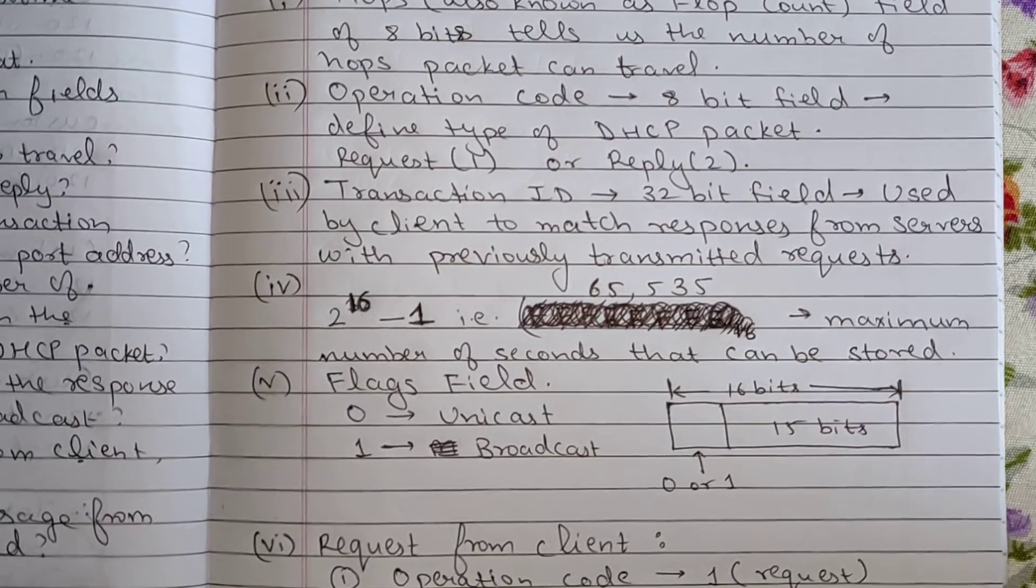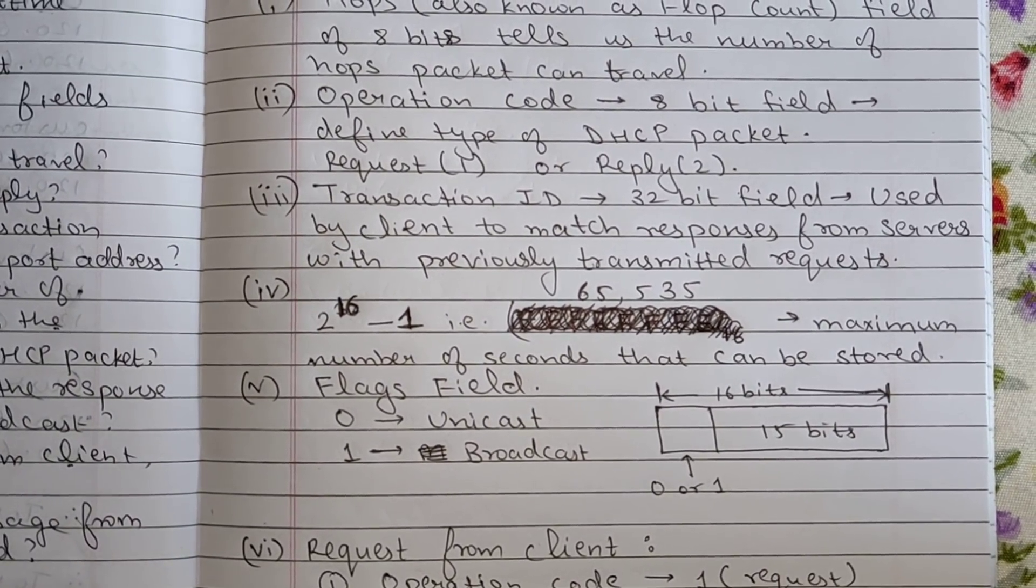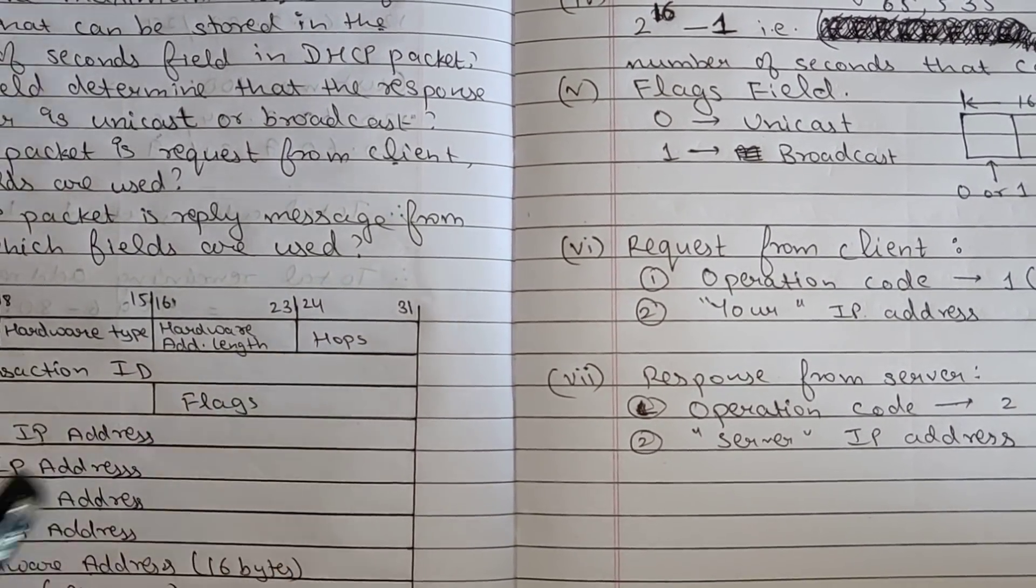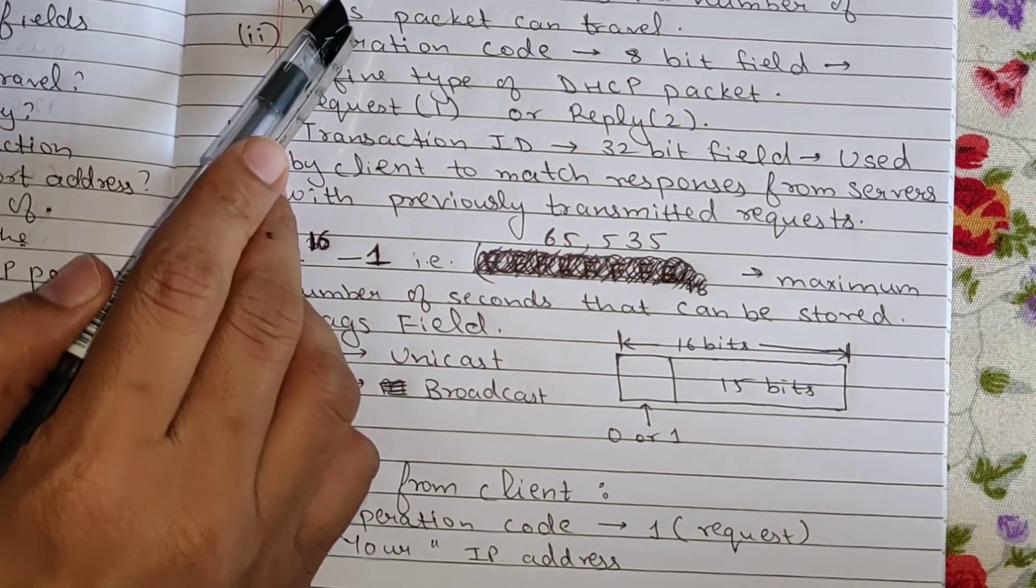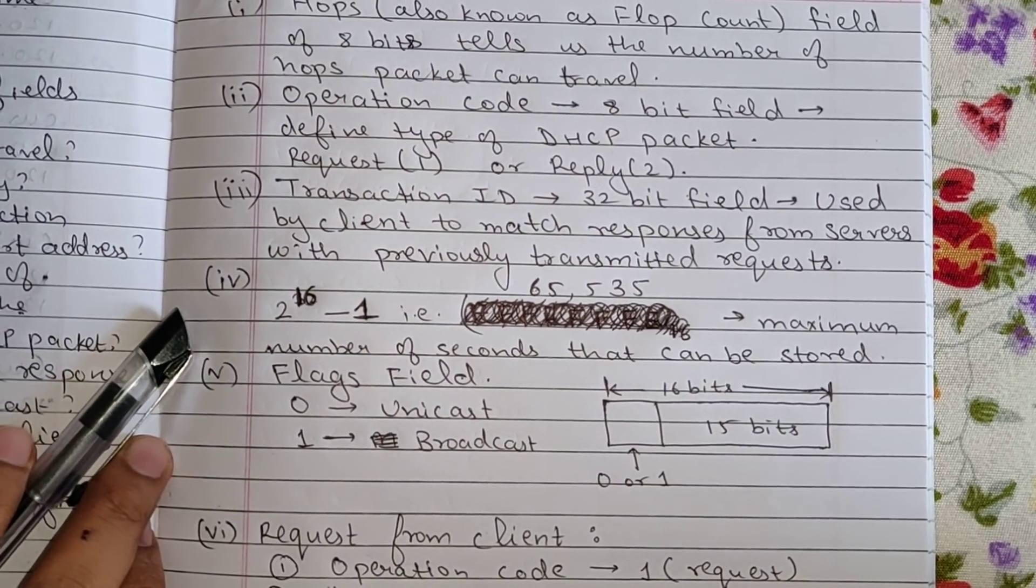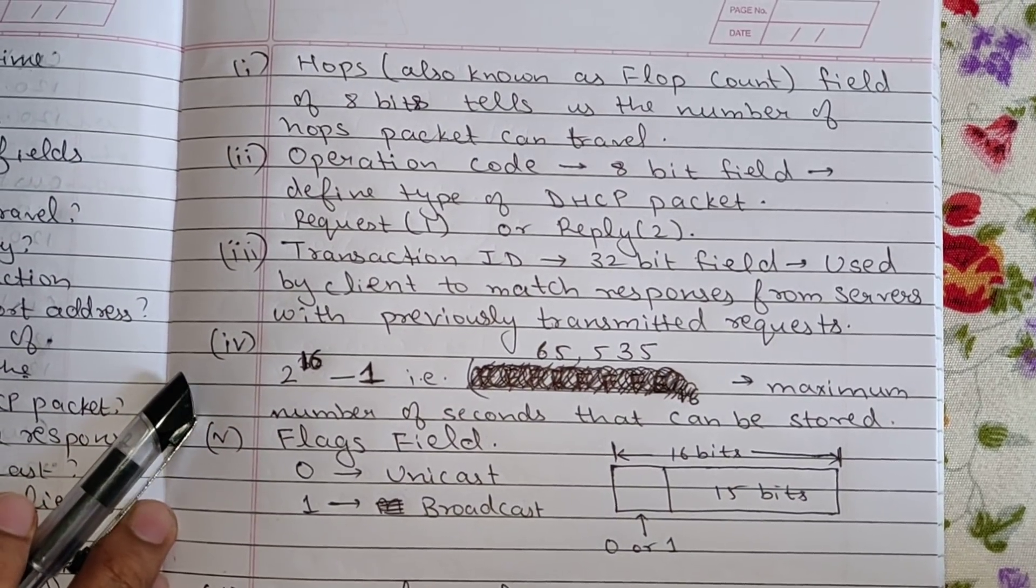So we had a field in the DHCP packet format of hops which was from 24 to 31, this one. So the number of hops, also known as the hop count field of 8 bits, it tells us the number of hops a packet can travel.